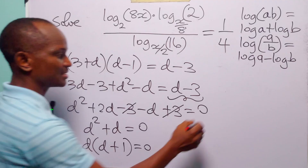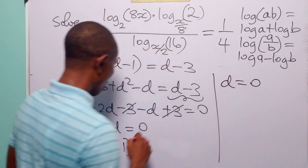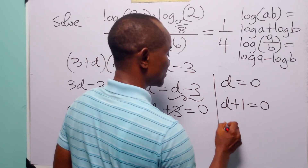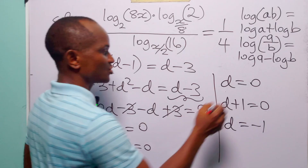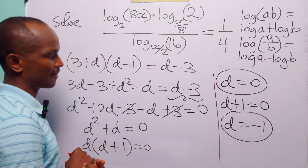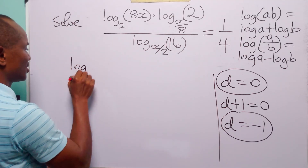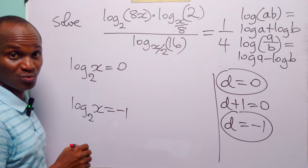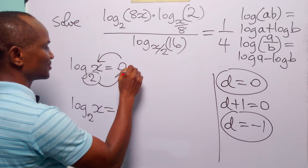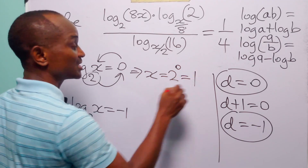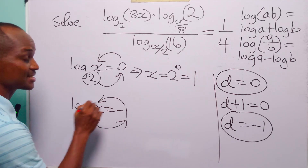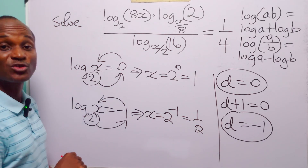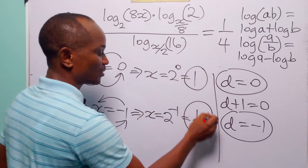Factorizing gives d(d + 1) = 0, so either d = 0 or d + 1 = 0, meaning d = −1. We have two values of d: 0 and −1. This means log base 2 of x = 0, giving x = 2⁰ = 1, or log base 2 of x = −1, giving x = 2⁻¹ = 1/2. So x = 1 or x = 1/2.